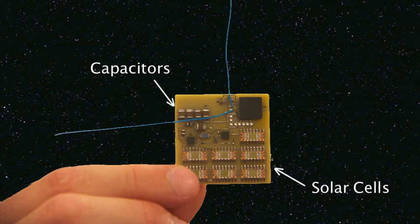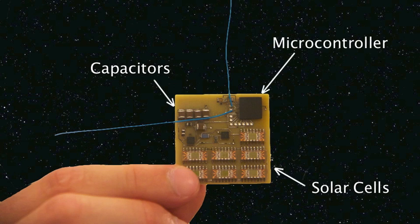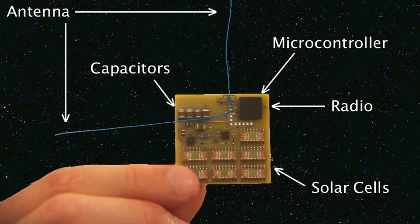Once the capacitors are fully charged, they're used to power up a microcontroller and radio, which then transmits a unique pseudo-random code for each sprite. This helps us individually identify and track them.